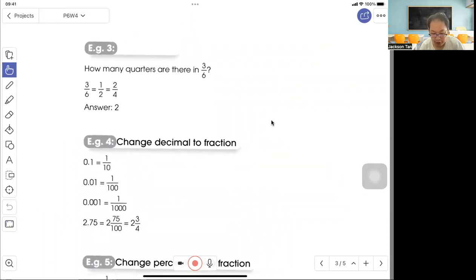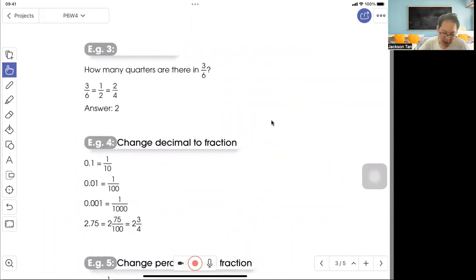Example 3: How many quarters are there in 3 out of 6? Quarter is out of 4. But 3/6, how to change to out of 4? First change to simplest form, that gives you 1/2, then you change to over 4. So the answer is 2 out of 4, 2 quarters, which is 2.